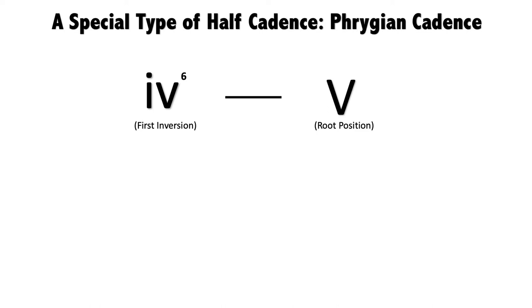Other than the harmonic limitations, we also have rules for the soprano voice in Phrygian cadence. The soprano voice must be scale degree 4 going to 5. This may seem abstract, so we're going to do an example where we build a Phrygian cadence ourselves.